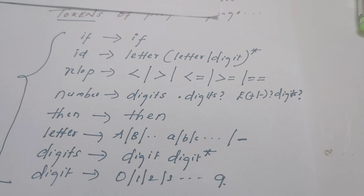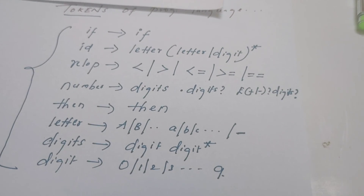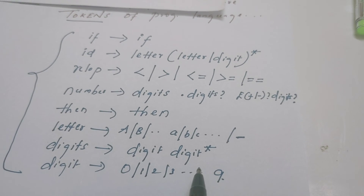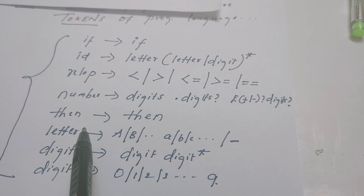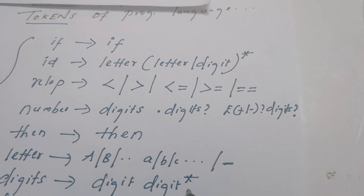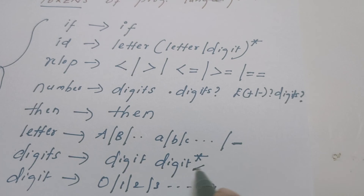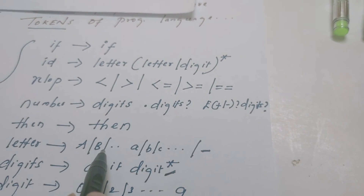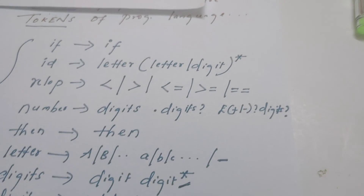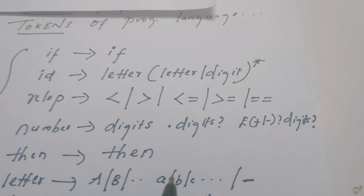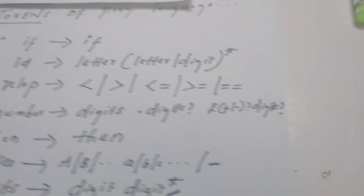How can we differentiate between a regular definition and a context-free grammar? In both cases we have a symbol on the left-hand side and a rule on the right-hand side. But in the regular definition, regular expressions appear on the right-hand side of the arrow mark. We can easily identify them by the operators: the star operator, plus operator, and union operator.